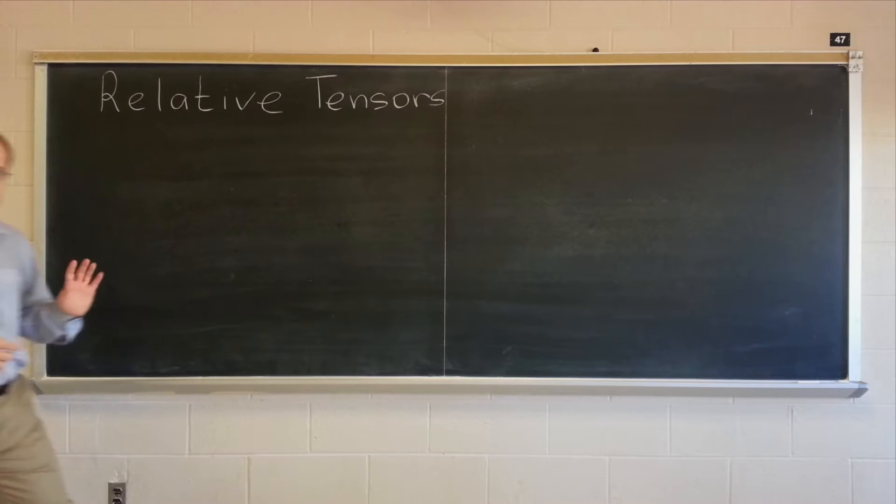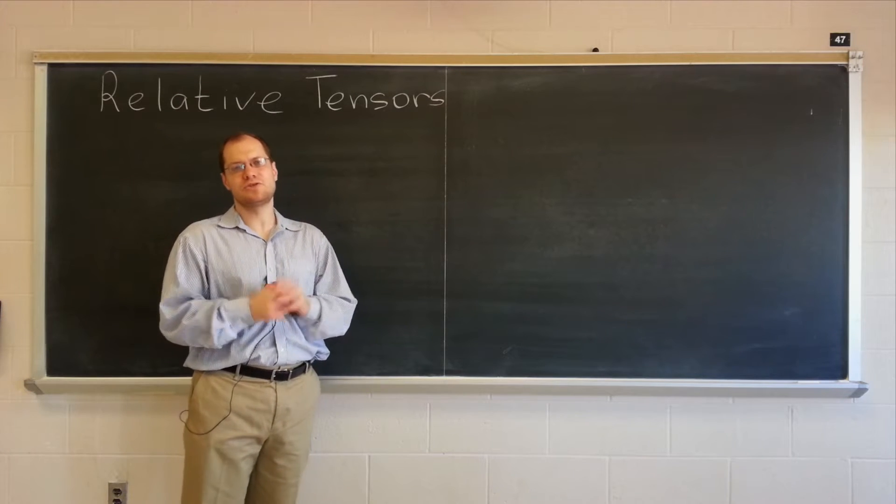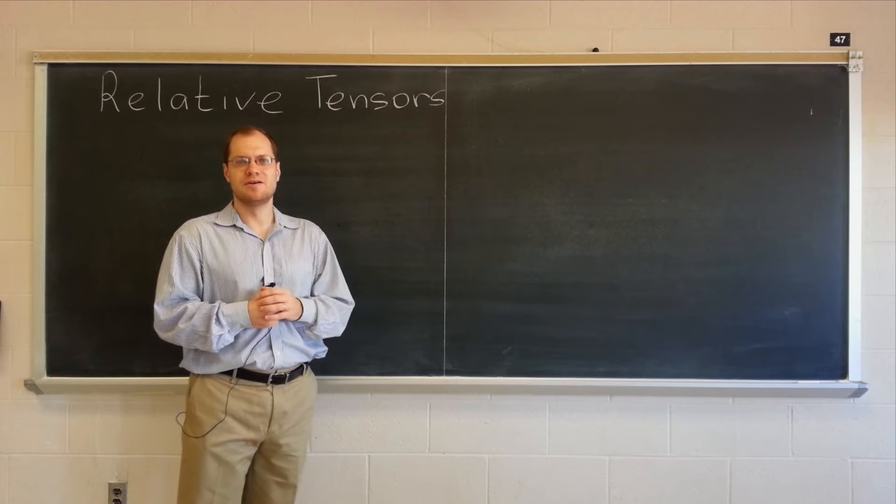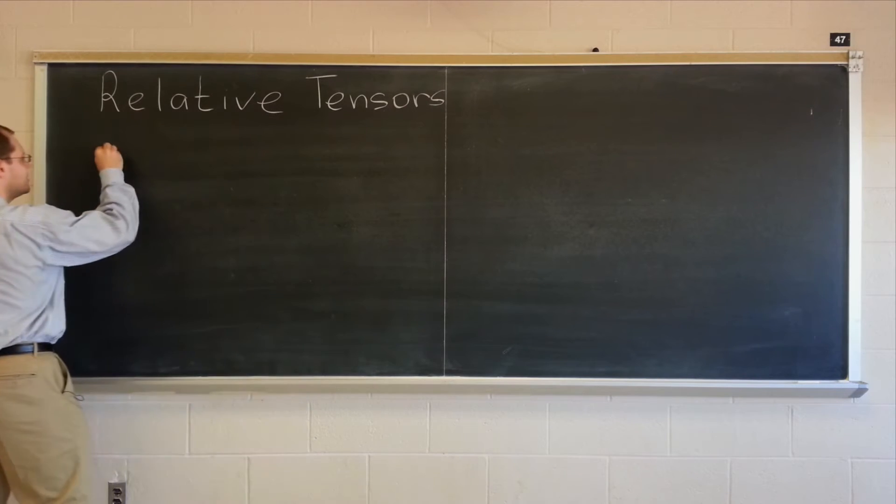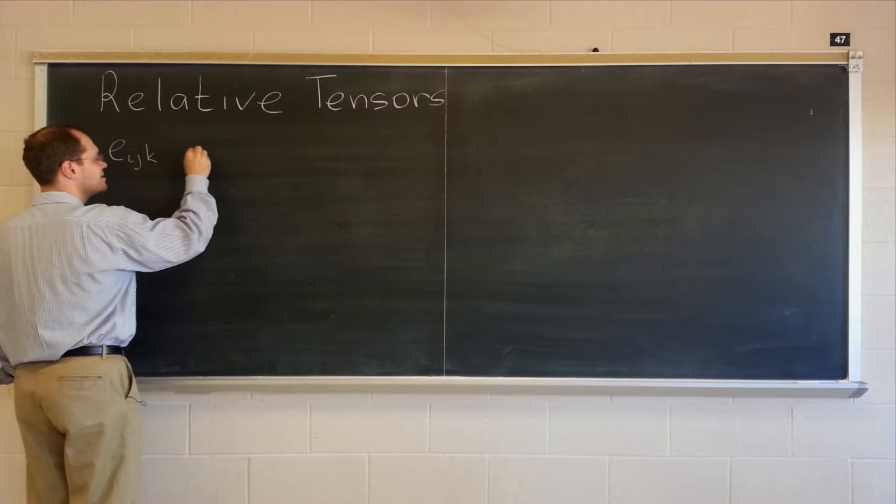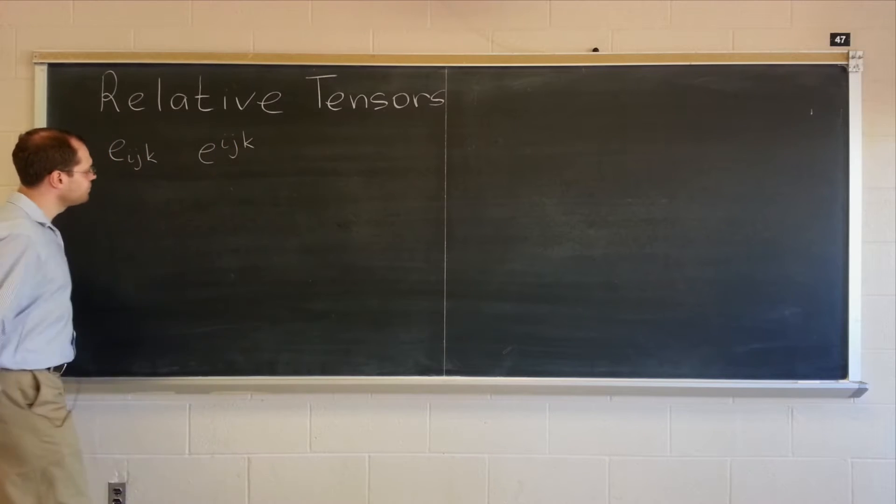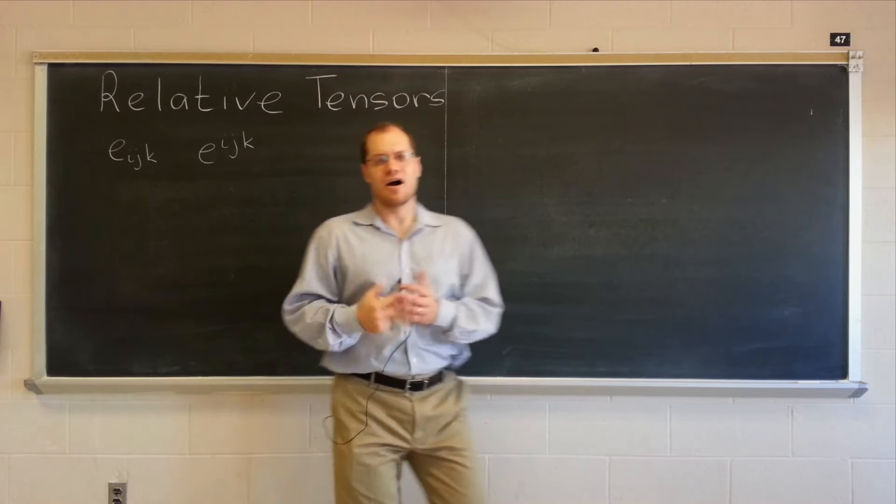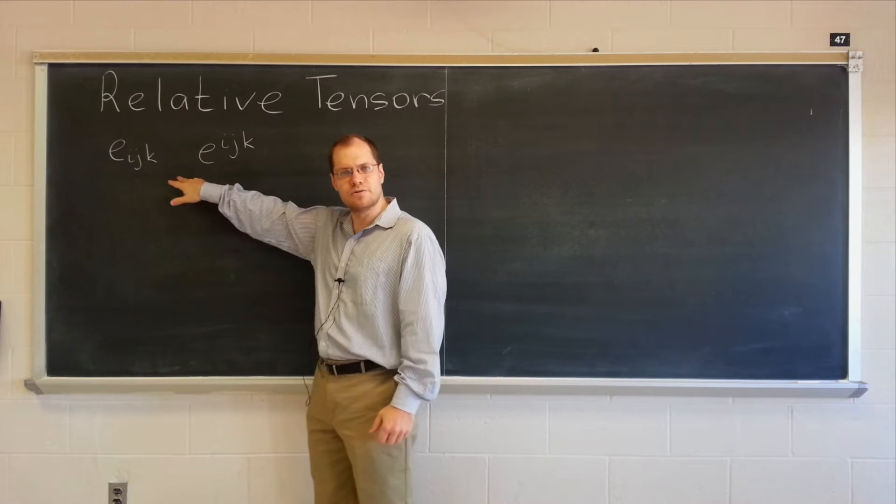Okay, well first, a warm-up question. We've defined two types of permutation symbols, with lower indices and with upper indices. EIJK and EIJK. And the interesting question is, are they related by index juggling? The notation certainly suggests that they do.